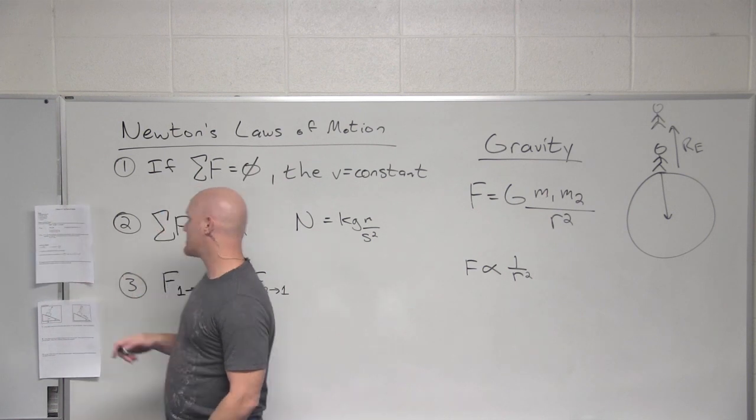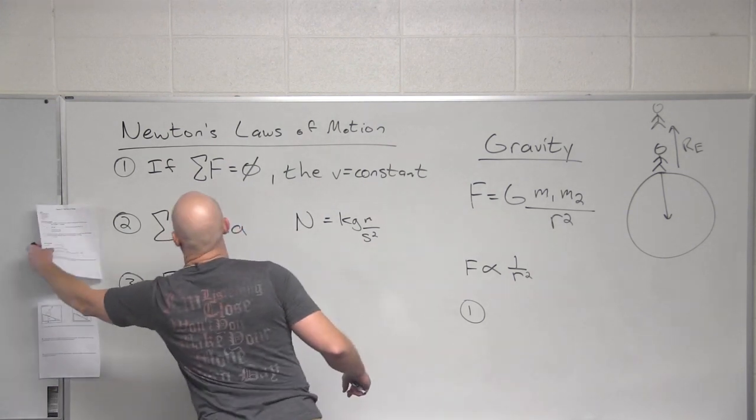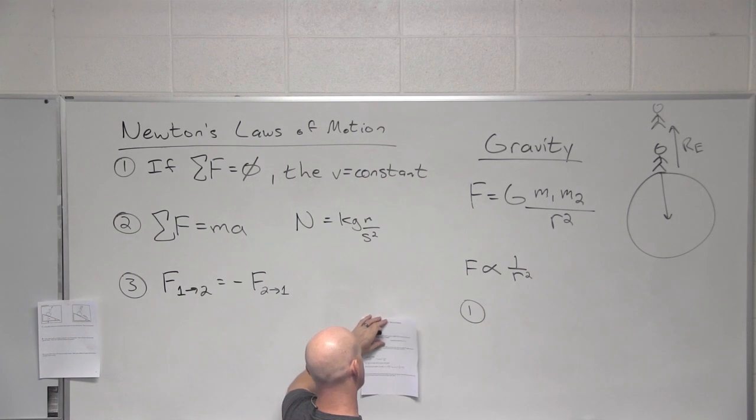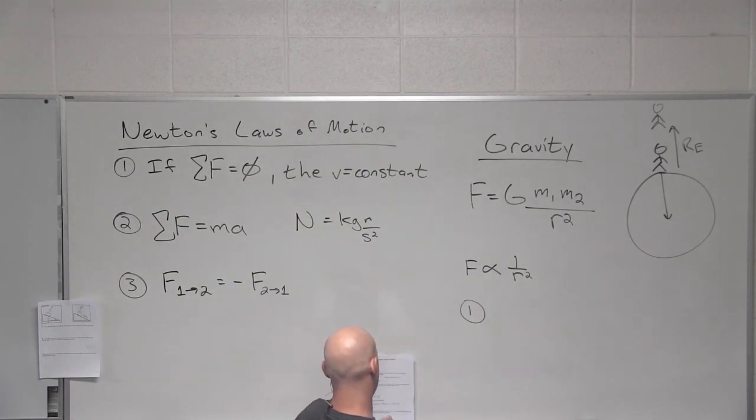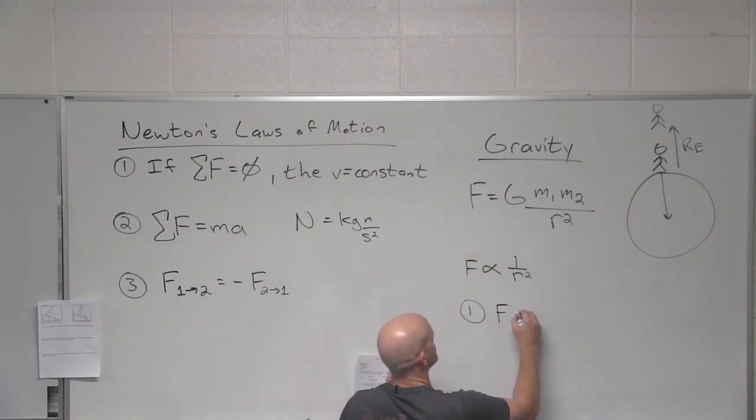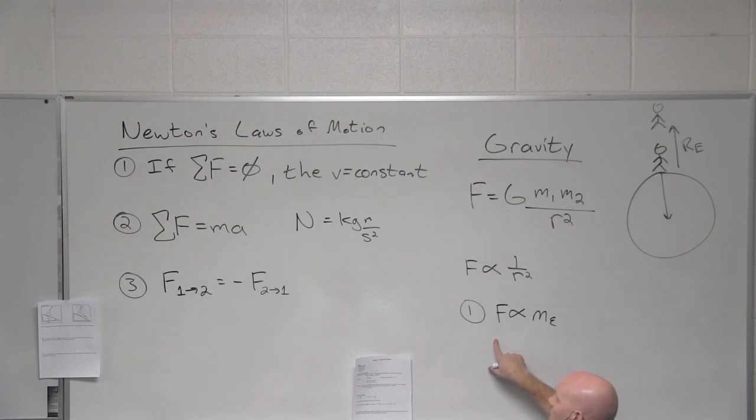So question number one on your handout here says if a planet has half the mass and half the radius of the Earth how does the acceleration due to gravity on the surface of this planet compare to that on the surface of the Earth? So first of all it has half the mass of the Earth. How is the force of gravity going to be related to the mass of the Earth? Yeah. So in this case force is going to be directly proportional to the mass of the Earth. So if I cut the mass of the Earth in half I'm going to cut that force in half as well. Okay.